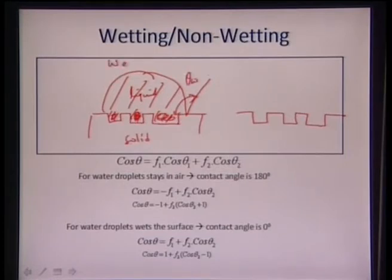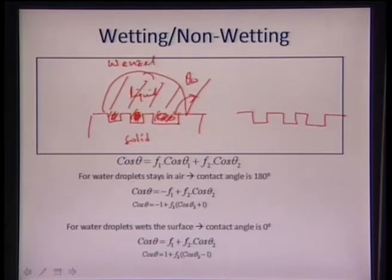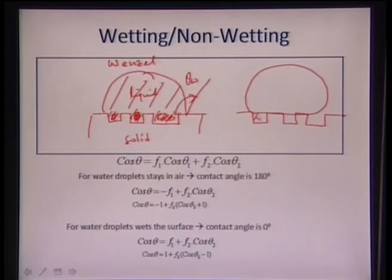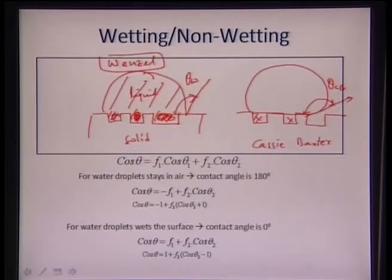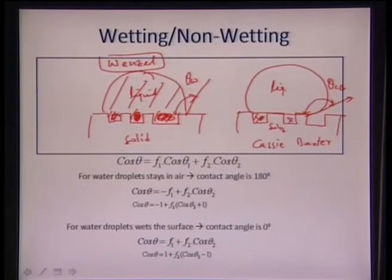This state is called the Wenzel state. In another case, a droplet may assume a similar shape but not fill in those cavities — the cavities remain unfilled. In this case we get a wetting angle called the Cassie-Baxter wetting angle. So we have two states: the Cassie-Baxter state, where liquid does not fill the grooves of the rough solid, and the Wenzel state, where the droplet fills those grooves. Some non-wetting already occurs at the Cassie-Baxter level.